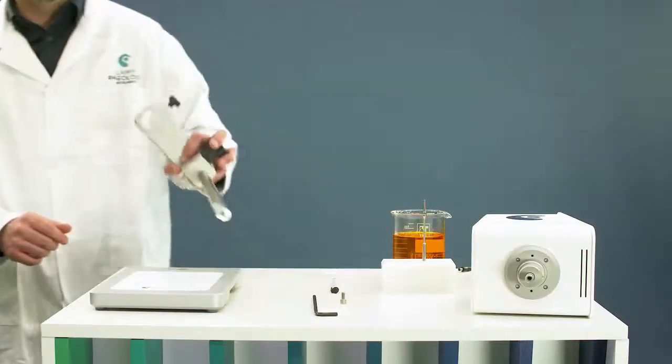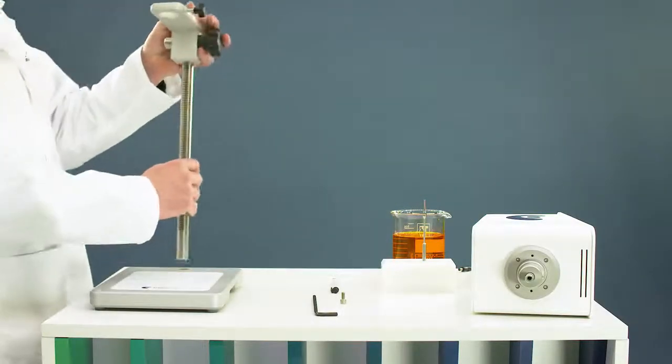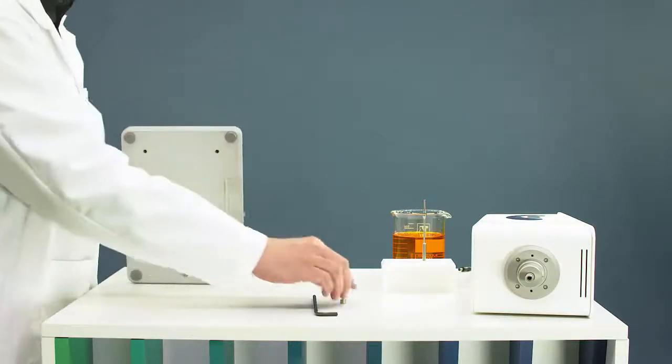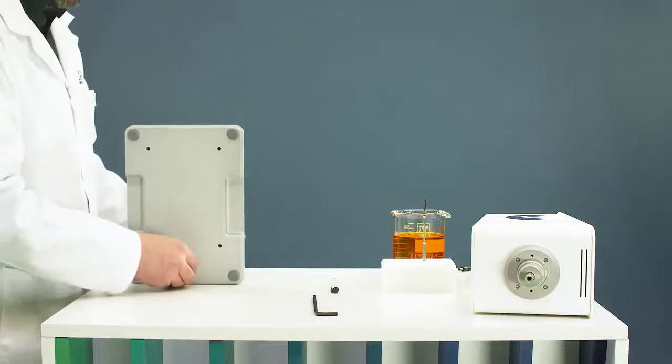Mount the stand to install the viscometer. Present the rod with the arm on the lower plate. Fix the rod with the provided screw.